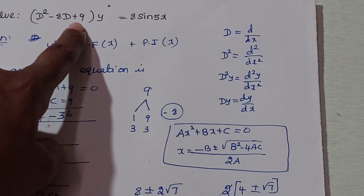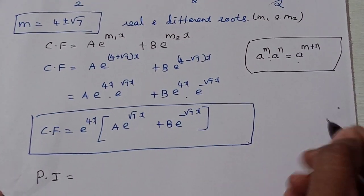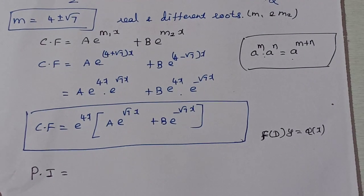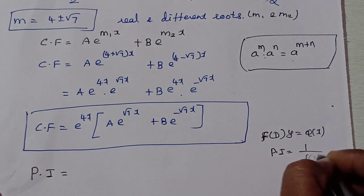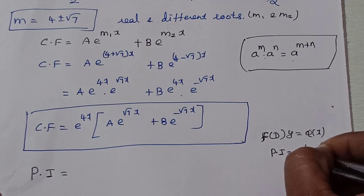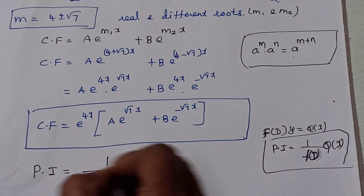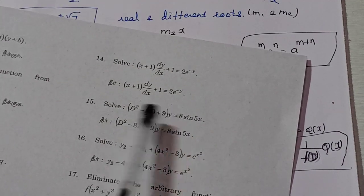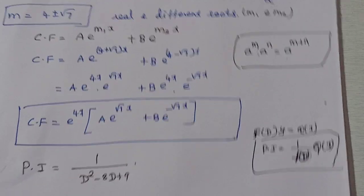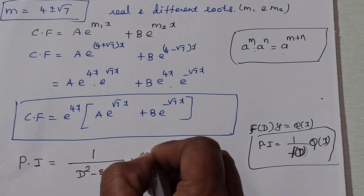The particular integral is 1 divided by f(D) into Q(x). The right hand side here is 8 sin 5x. There are four cases for particular integrals: case 1 is e^(ax), case 2 is sin or cos function, case 3 is x^m or polynomial in x, and case 4 is exponential times some function. Our problem is case 2.